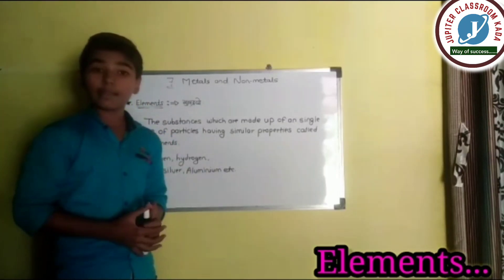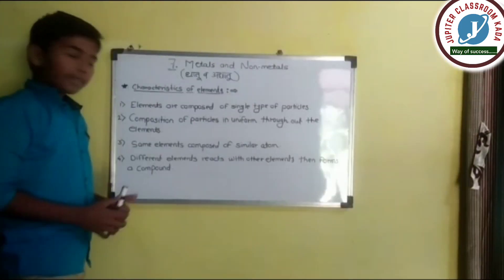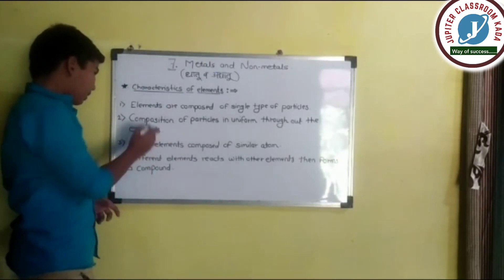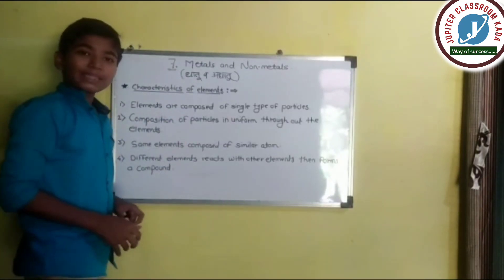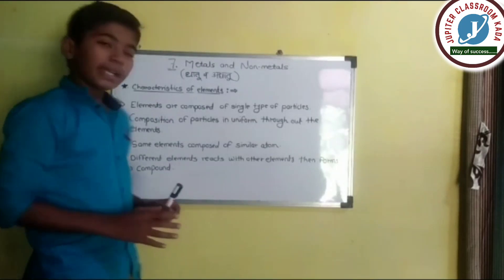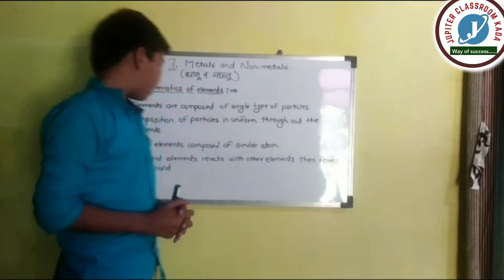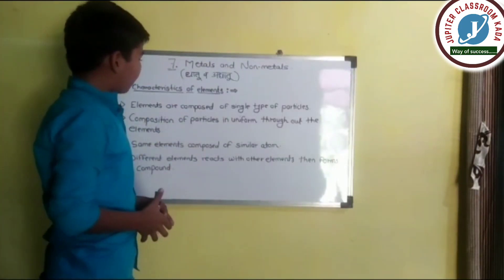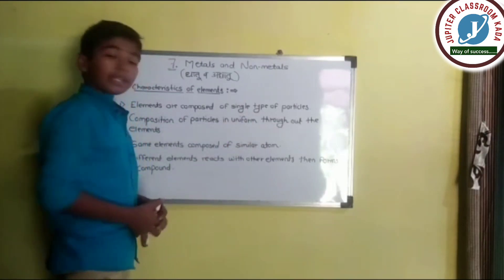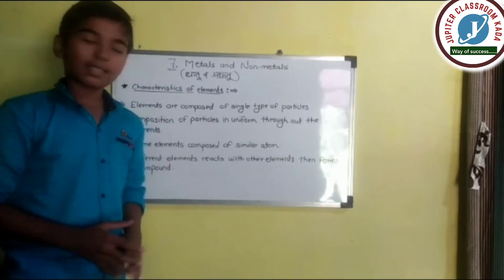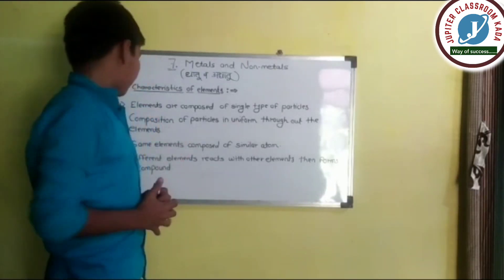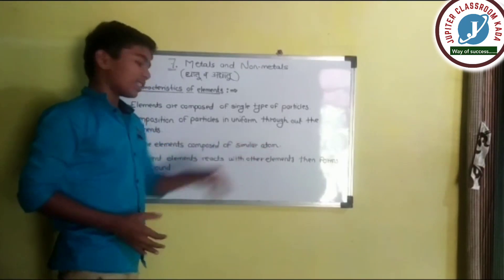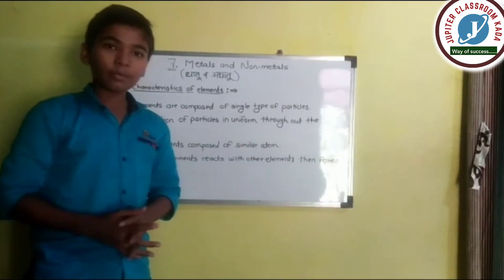Next, the 2nd point is characteristics of elements. The first characteristic is: elements are composed of a single type of particle — meaning elements are made up of a single type of particle. The second characteristic is: composition of particles is uniform throughout the elements — meaning the arrangement of particles within elements is the same throughout.